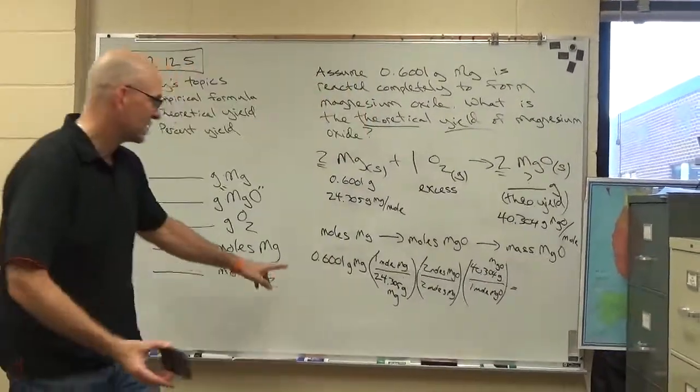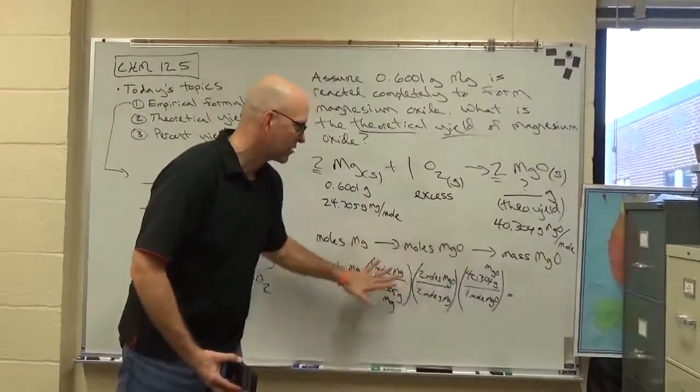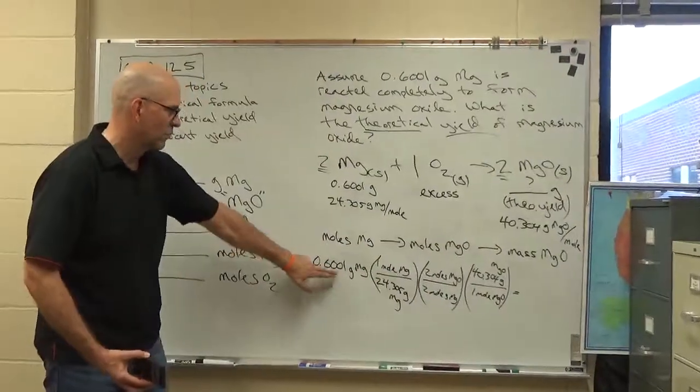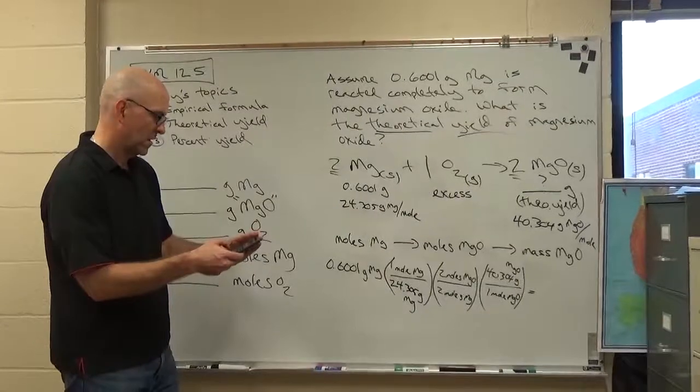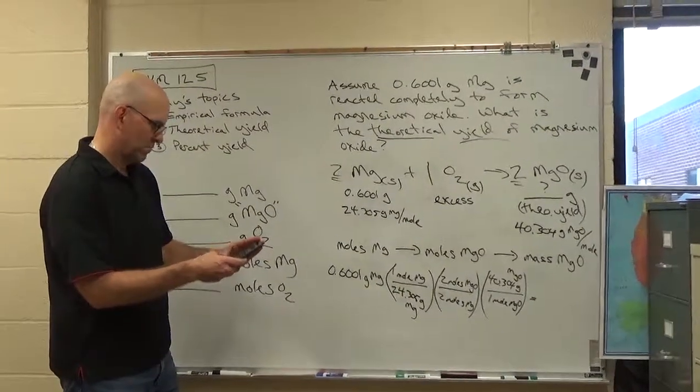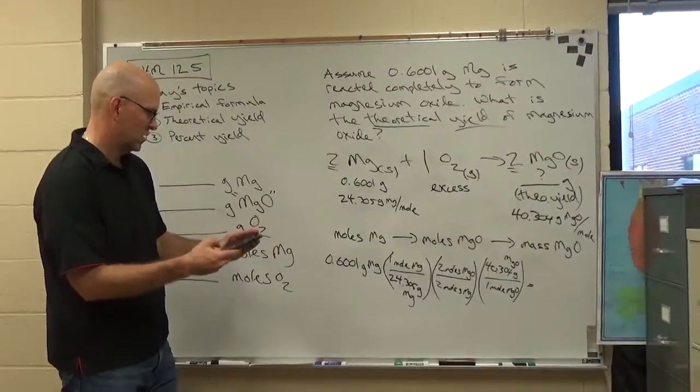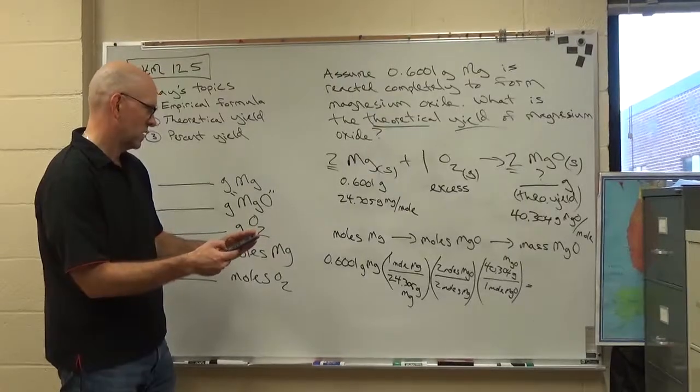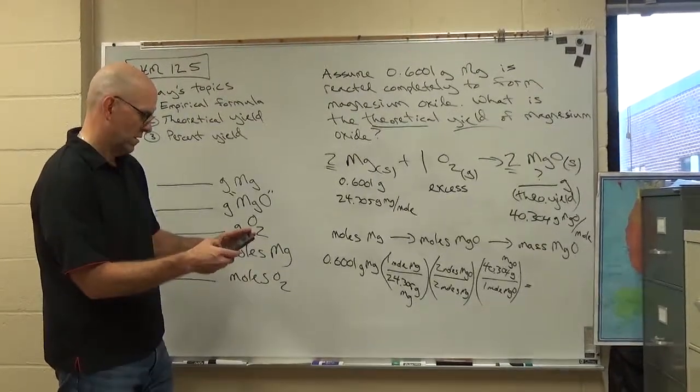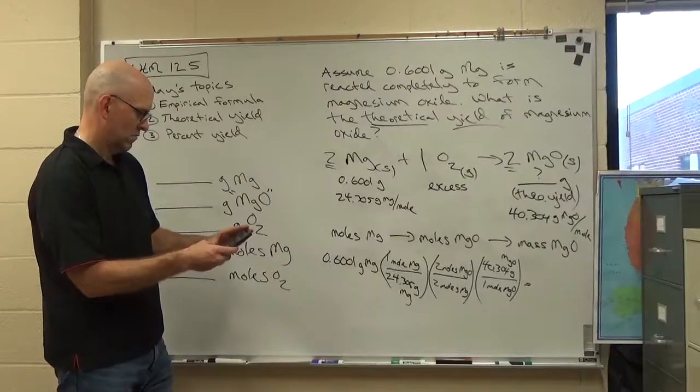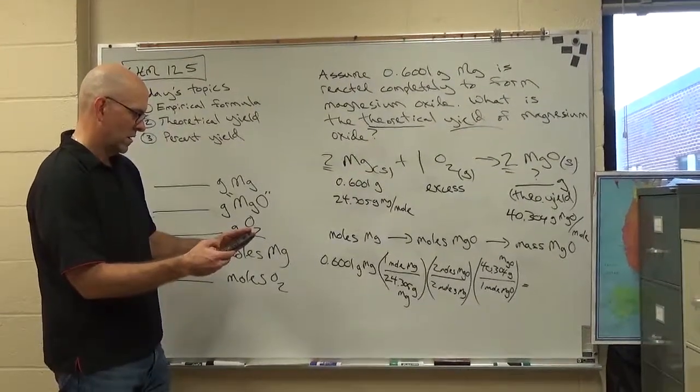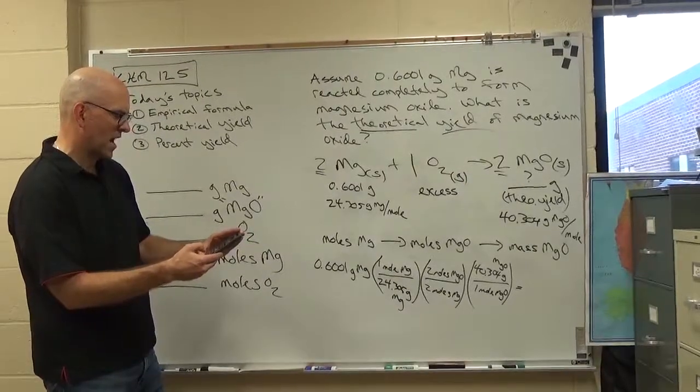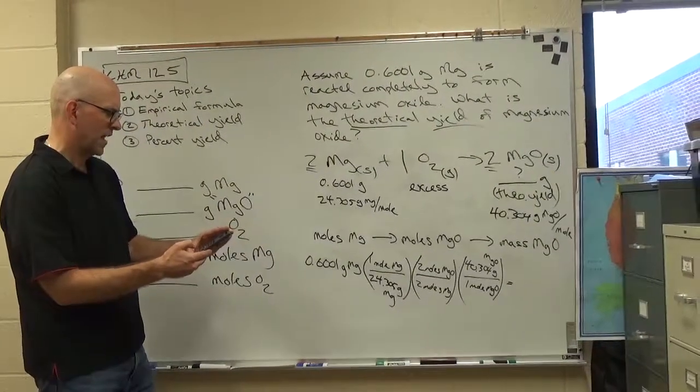So what I got, and then, oh, sig figs. These are all exact numbers. We don't have those affect the sig figs, so we want four in our answer. So I'm going to get 0.6001 times, equals this divided by 24.305. And rounding it, 0.9951.